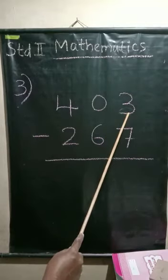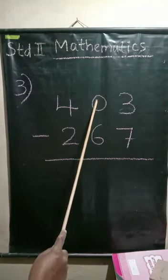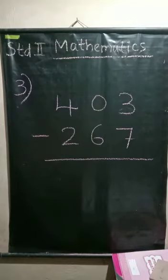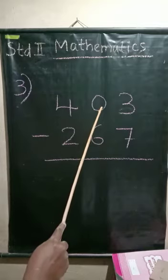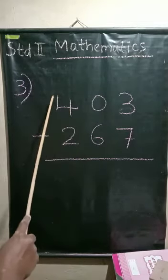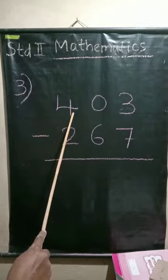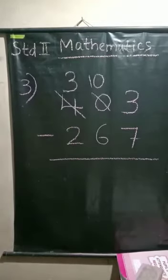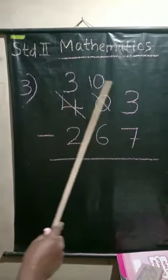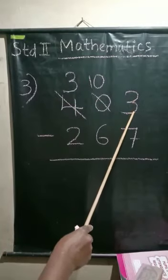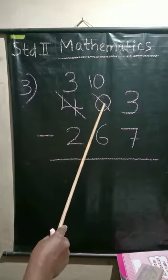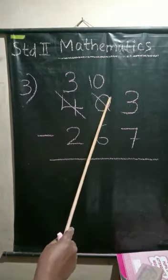So borrow one from the next place. Zero, and one from the next place. Zero means nothing. Now borrow one from the next place, zero in the next place. No, you cannot take one. Zero is nothing.